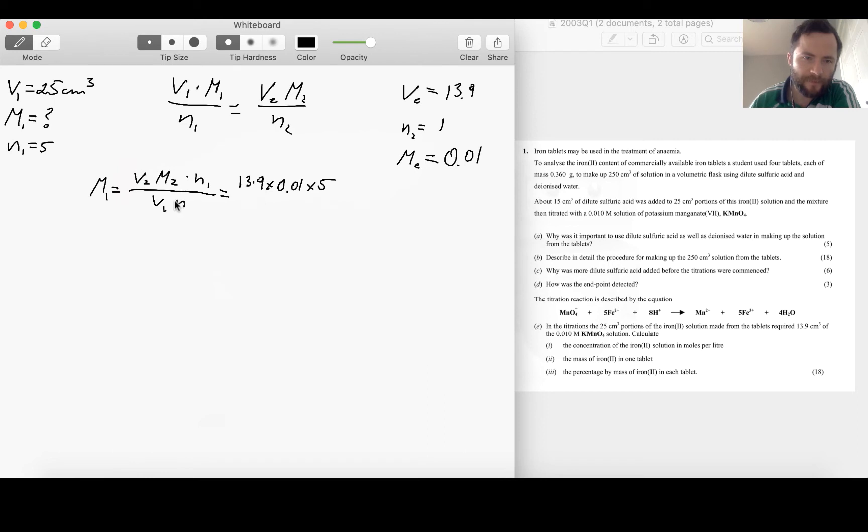So putting the quantities in: 13.9 times 0.01 times 5 divided by 1 times 25 gives me a quantity of 0.0278 moles per liter of iron in this solution. So that's the concentration of iron too in moles per liter.